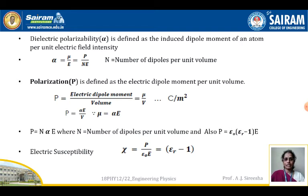Dielectric polarizability, denoted by α, is defined as the induced dipole moment of an atom per unit electric field intensity. So α = μ / E = P / (n · E), where n is the number of dipoles per unit volume.